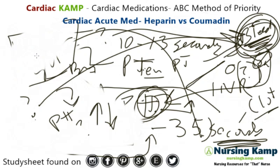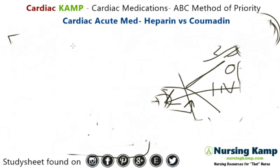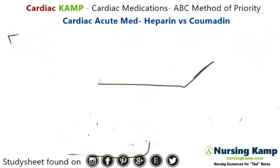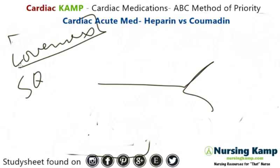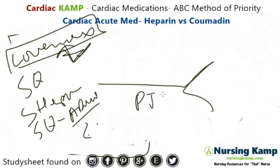There's also subcutaneous heparin, sometimes called Lovenox. Subcutaneous heparin is different in that it's given sub-Q — preferably in the abdomen, away from the umbilicus — and we never massage Lovenox sites. You don't have to monitor PTT with sub-Q heparin because it's not a drip.